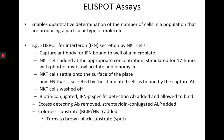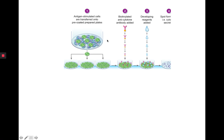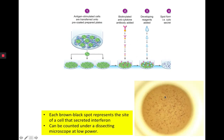Where cytokines are bound onto the well, you will see a brown-black spot. You have antigen-stimulated cells transferred onto plates that already have antibodies detecting interferon; they're stimulated, the anti-cytokine antibody and substrate are added, and you see black spots. Each spot represents the site where a cell secreted interferon. By counting each spot, you're essentially counting the natural killer cells that secreted that interferon, giving you an idea of the number of cells.